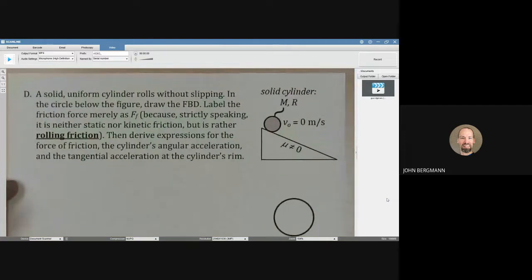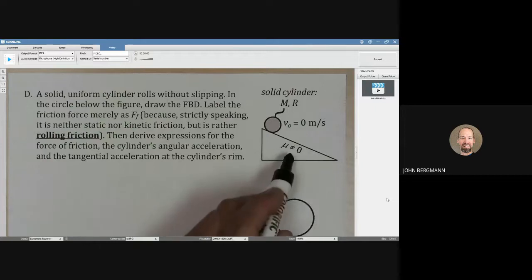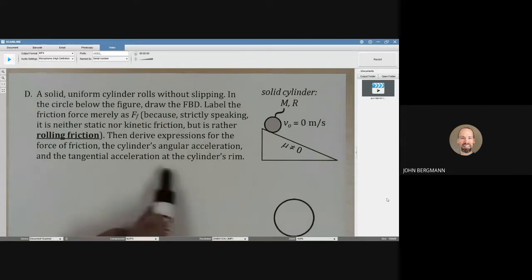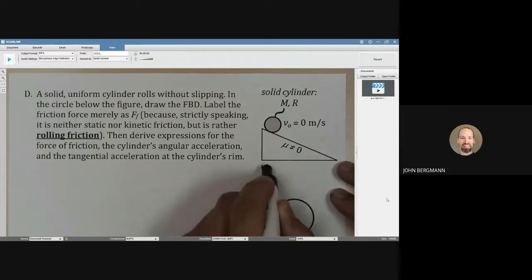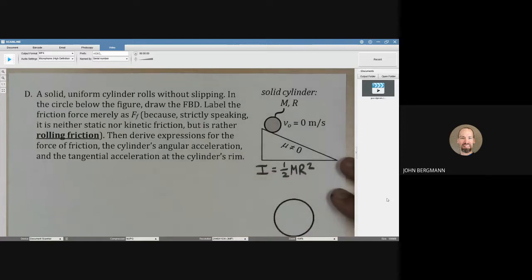Here we have a solid cylinder that is going to roll down this ramp. There's enough friction so that this will roll and not slide, and we want to know what the force of friction is, what the angular acceleration of the cylinder is, and what's the tangential acceleration at the rim of the cylinder. We remember that the moment of inertia for a cylinder or disc is one-half m r squared.